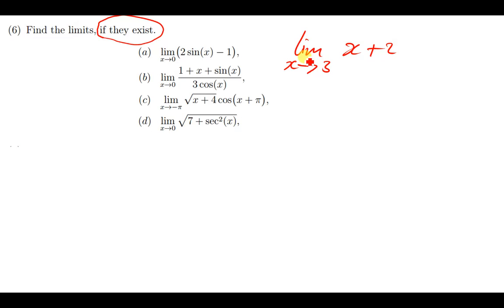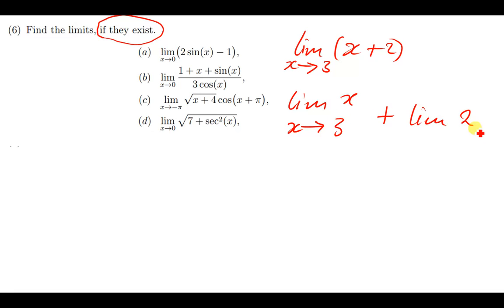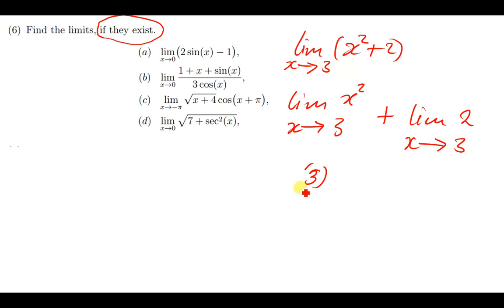you just have to distribute this limit throughout the function. That means you're going to say: the limit of x as x approaches 3, plus the limit of 2 as x approaches 3. This part is just the same as replacing x with 3. If, for instance, x was squared, you'd put 3 in and get 3 squared, plus the limit of a constant, which is just that constant. So you'd have 9 plus 2, which gives you 11. This is how you solve limits.